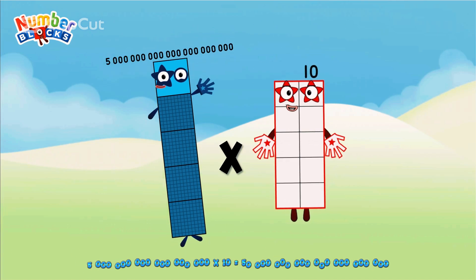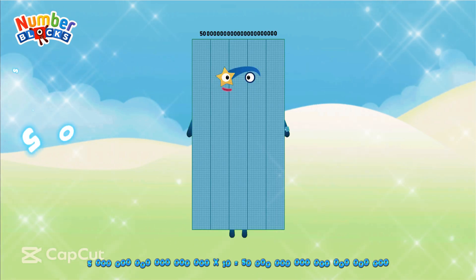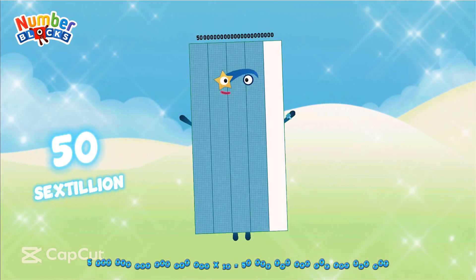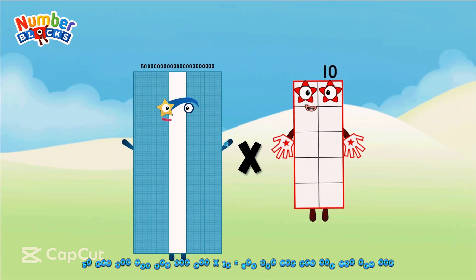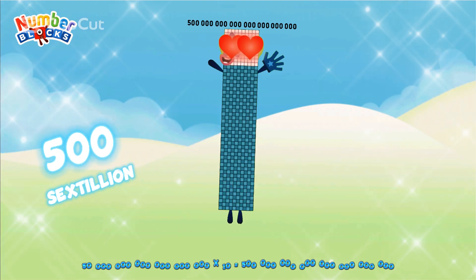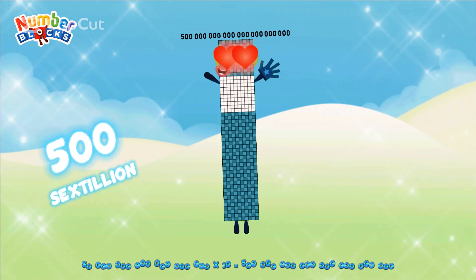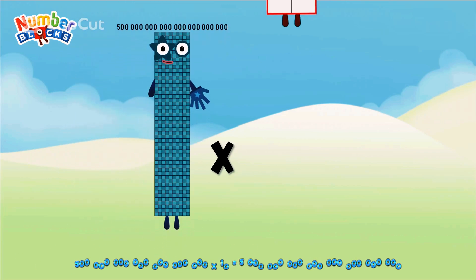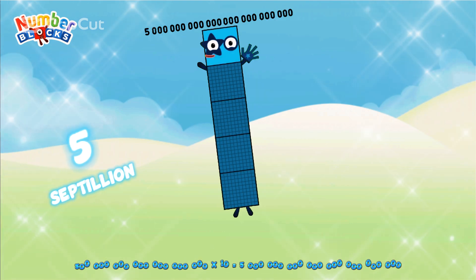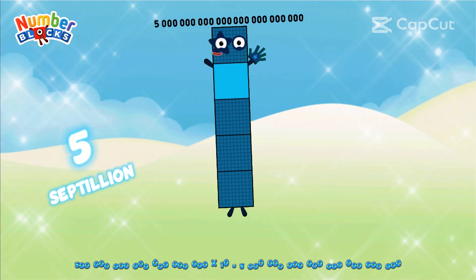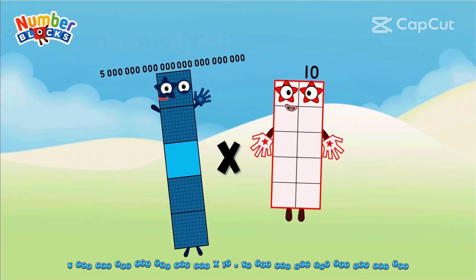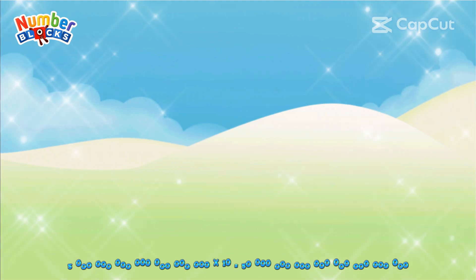Five sextillion multiplied by ten equals fifty sextillion. Fifty sextillion multiplied by ten equals five hundred sextillion. Five hundred sextillion multiplied by ten equals 50 septillion.